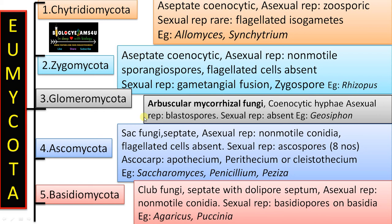To summarize the five phyla of true fungi: first, Chytridiomycota — the most primitive, with flagellated cells in their life cycle; second, Zygomycota — also aseptate and coenocytic, without flagellated cells; third, Glomeromycota — arbuscular mycorrhizal fungi where sexual reproduction is absent; fourth and fifth, Ascomycota and Basidiomycota — the most advanced, with well-developed septate mycelium and fruiting bodies. Together they form the Dikarya with a prominent dikaryotic stage, and Basidiomycota are the most advanced group of fungi.